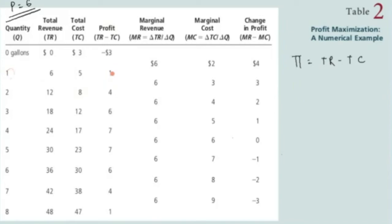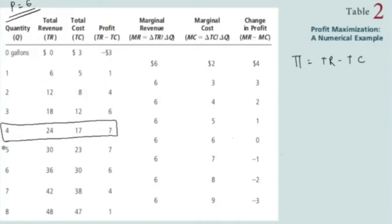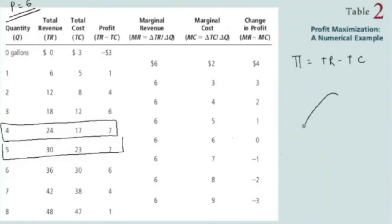Profit increases from minus three to one — the firm would want to produce the first unit. From one to four — the firm would want to produce the second unit also. From four to six — obviously produce the third unit. Profit moves from six to seven and then stays constant. At the fourth unit profit increases to seven dollars. At five units profit stays the same at seven dollars. But once you produce the sixth unit, profit drops to six dollars.